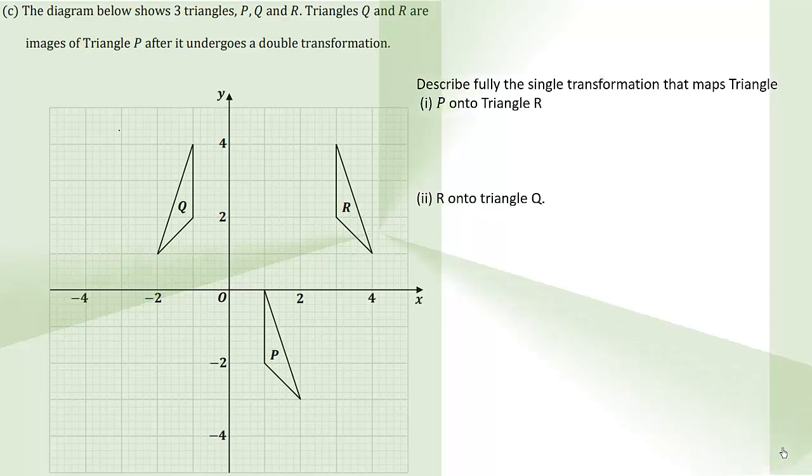The diagram below shows three triangles P, Q, and R. Triangles Q and R are images of triangle P after it undergoes a double transformation.